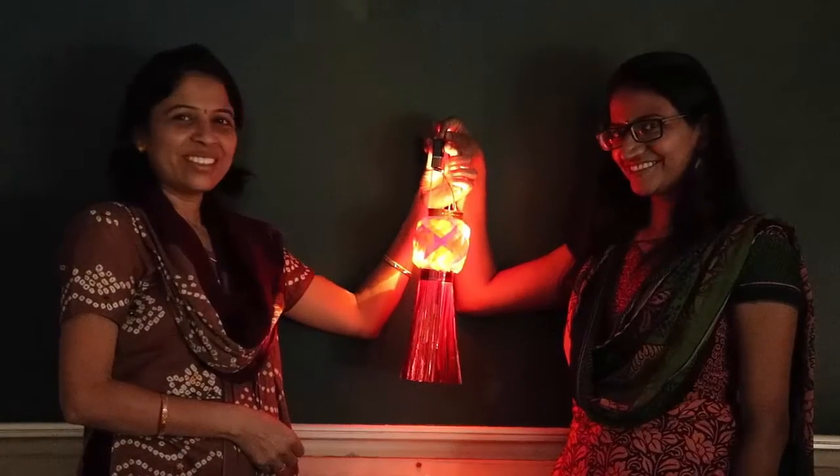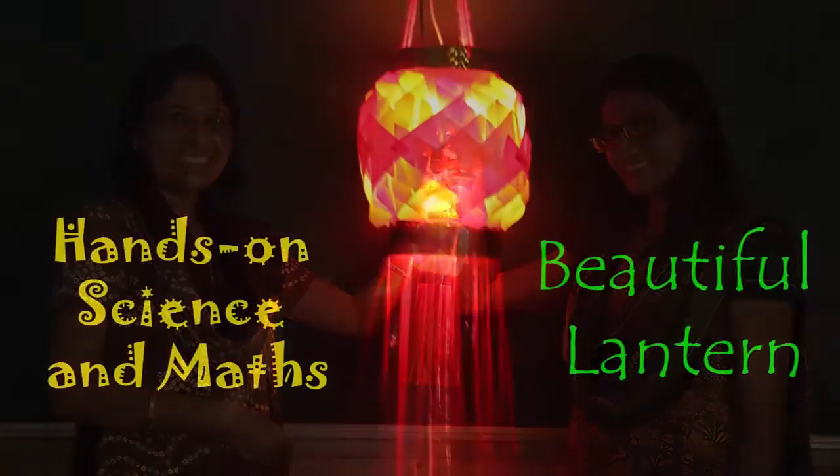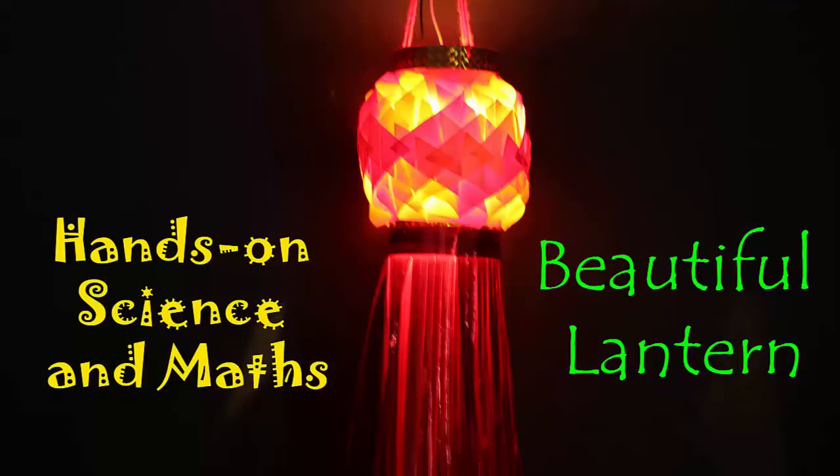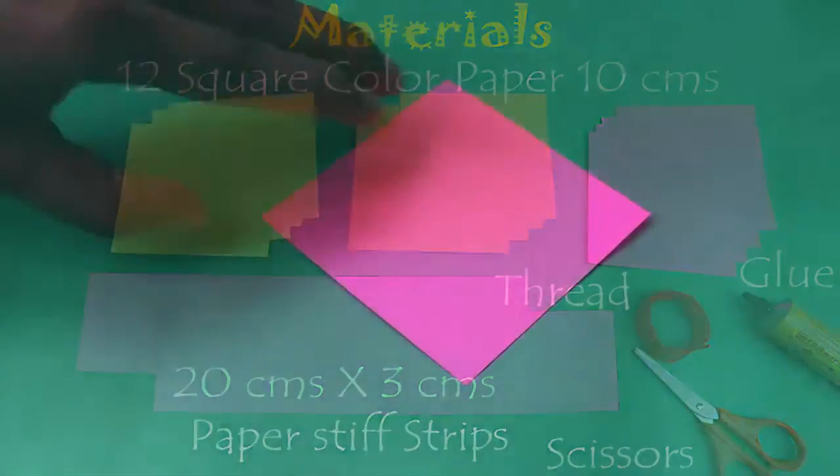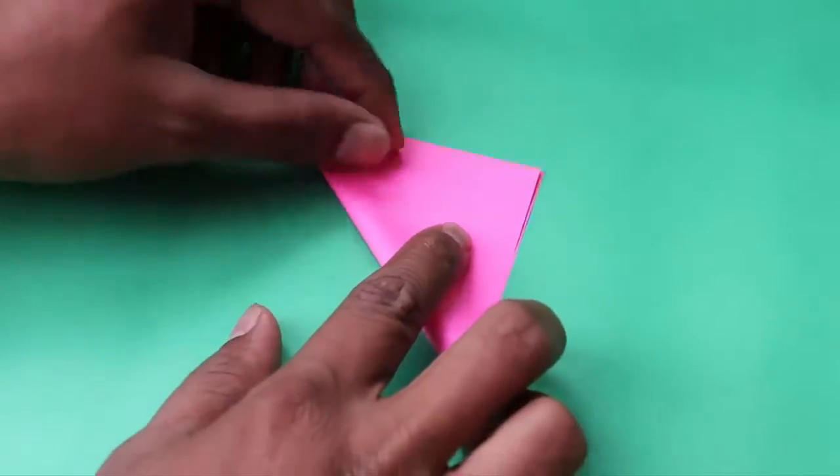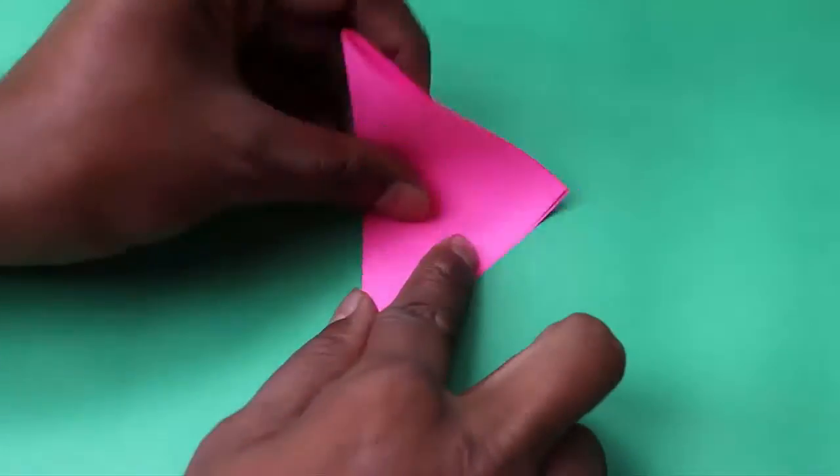For making this beautiful lantern you will need 12 squares of colored paper, all 10 centimeters on the edge. You will also need some stiff card strips to make the holders, as well as scissors and glue.